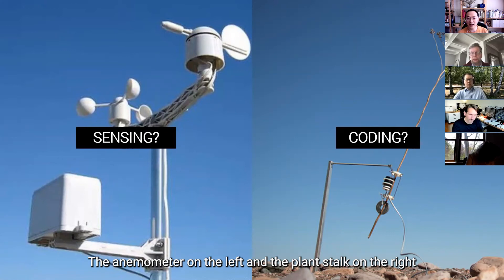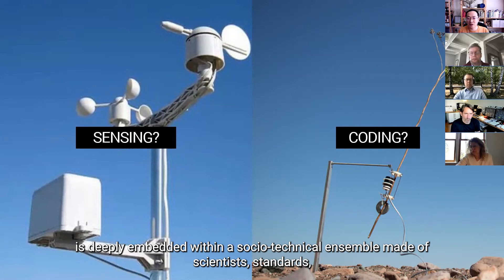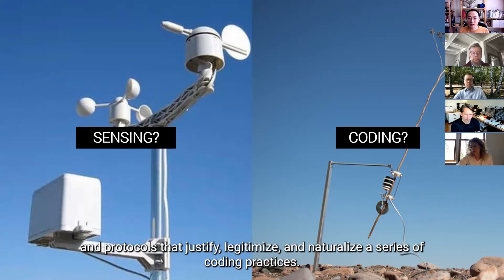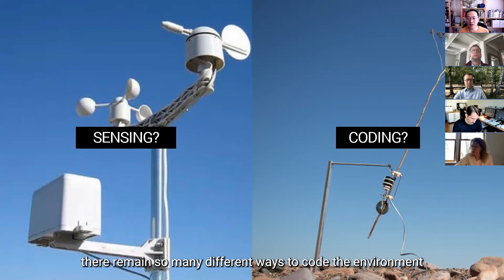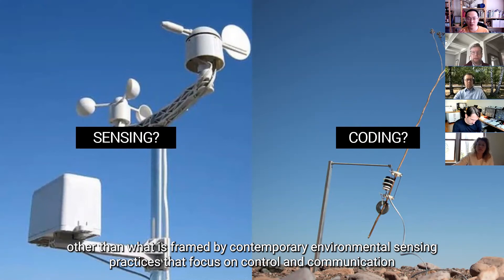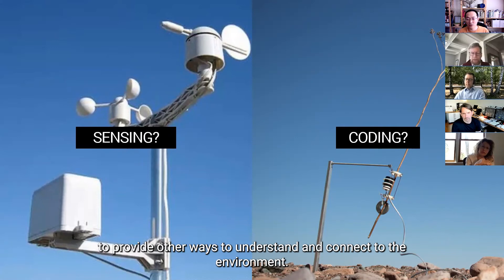And so, Bowen's art project teased out something about environmental sensing that is so apparent, but people always overlook, is that we do not really collect data. We merely invent instruments to code the environment into a datascape made of ones and zeros. So, the anemometer on the left and the plant stock on the right are the same in terms of coding the environment into data. The only difference is that anemometer as a scientific instrument is deeply embedded within a sociotechnical ensemble made of scientists, standards, and protocols that justify, legitimize, and naturalize a series of coding practices. So, the moral behind the story is that there remain so many different ways to code the environment other than what is framed by contemporary environmental sensing practices that focuses solely on control and communication. And this is also why I believe that citizen sensing holds much promise in this cybernetic environment to provide other ways to understand and connect to the environment.